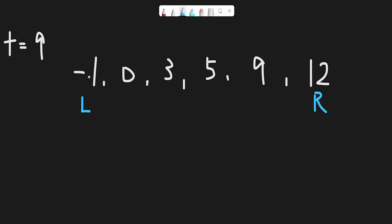Now left pointer is at index 0 and right pointer is at index 5. So 0 plus 5 divided by 2 gives us index 2 as the middle point. We compare the target number with the middle number, which is 3. Since 9 is greater than 3, the target number is definitely located on the right side of the middle point, because the input array is sorted from left to right with numbers getting bigger.